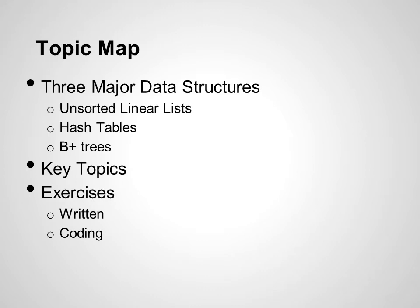During this presentation, we will discuss the three major data structures: unsorted linear lists, hash tables, and B plus trees. Each of these data structures have their own advantages, disadvantages, and particular structures. Once we've covered these topics, we'll move on to the key topics section, where we will discuss the things that are important about data structures and what you should take away from this presentation. Finally, we will test your knowledge with a few exercises — some written and some coding that you can do on your own time.